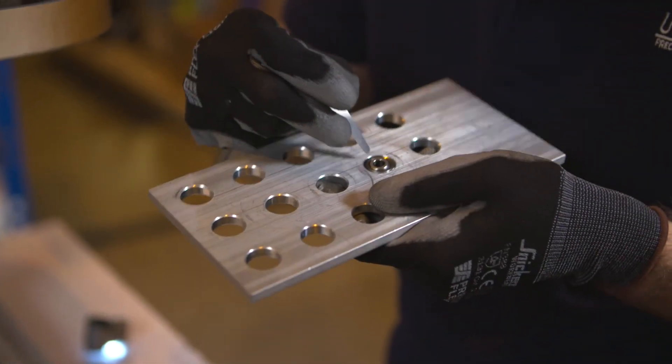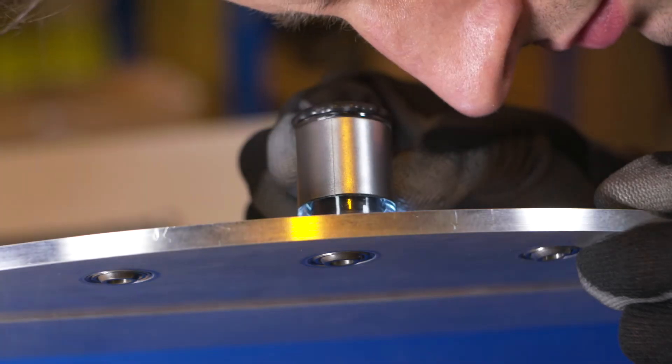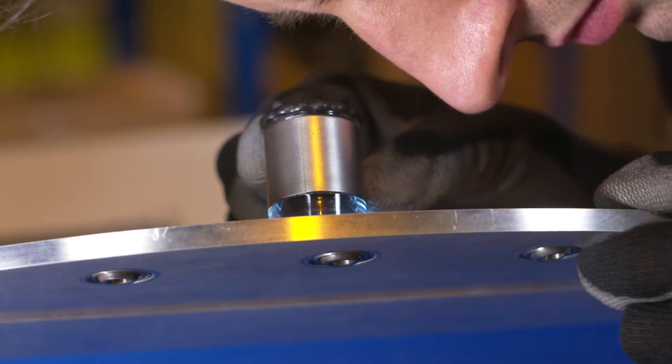Use a feeler gauge to determine this gap. Use a magnifying glass to ensure no smearing or galling is present on the bearing V-groove.